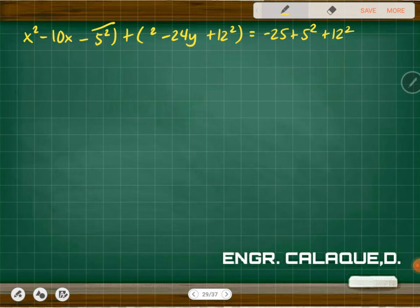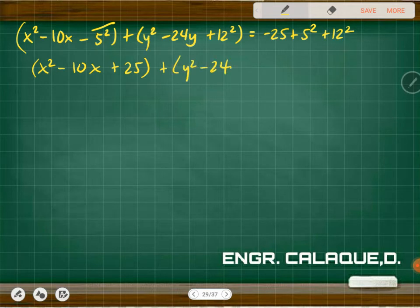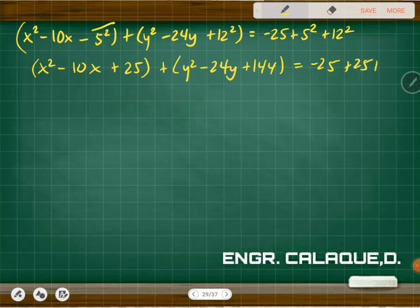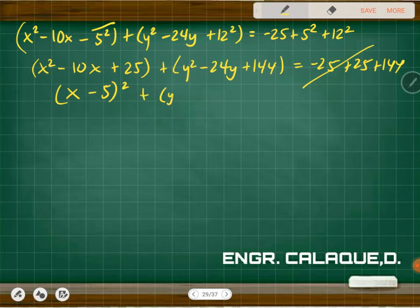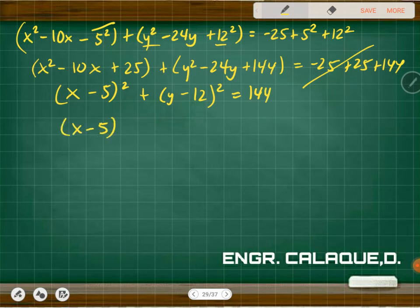Simplifying: x squared minus 10x plus 25, plus y squared minus 24y plus 144, equals negative 25 plus 25 plus 144. Those cancel out, so we factor: x minus 5 squared plus y minus 12 squared equals 144, or therefore x minus 5 squared plus y minus 12 squared equals 12 squared. That is the standard form.